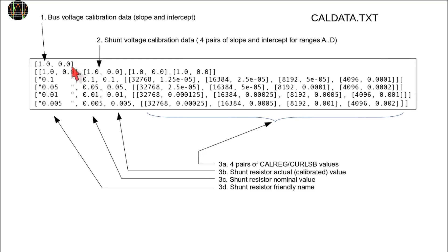The bus voltage line is exactly as before. The shunt voltage calibration is on a new line with four pairs of values, one pair for each range A, B, C and D.